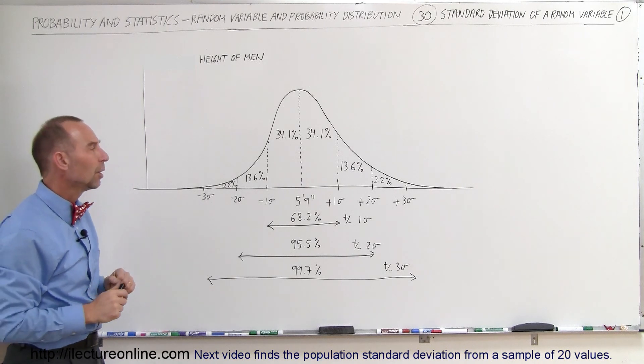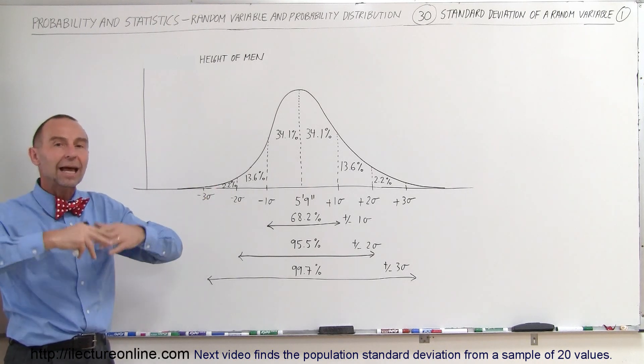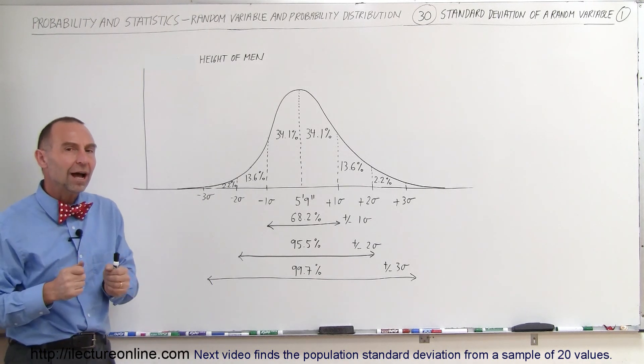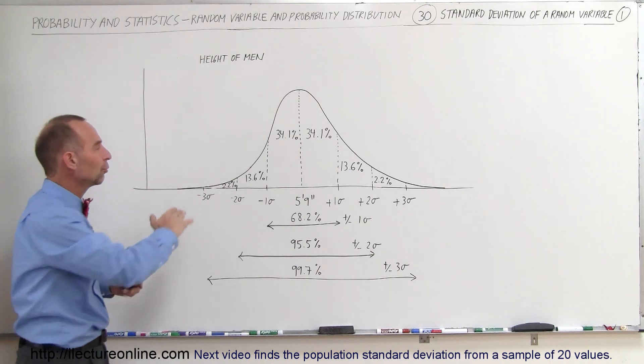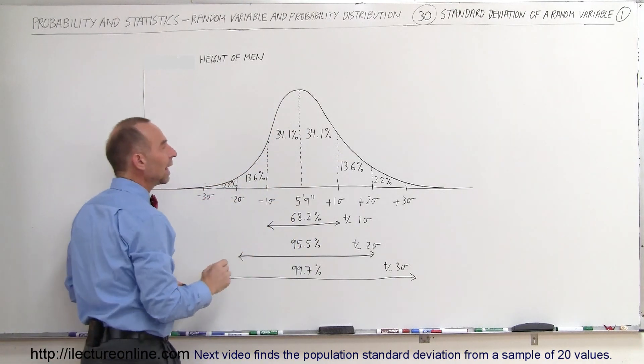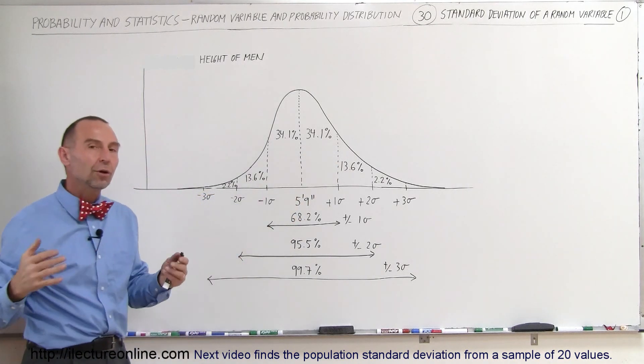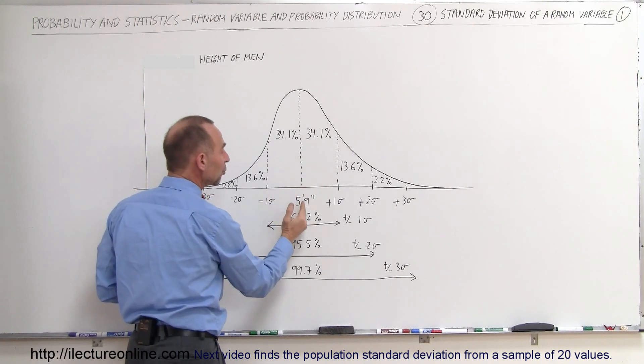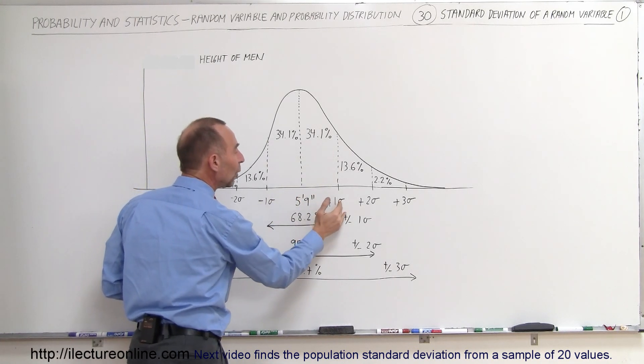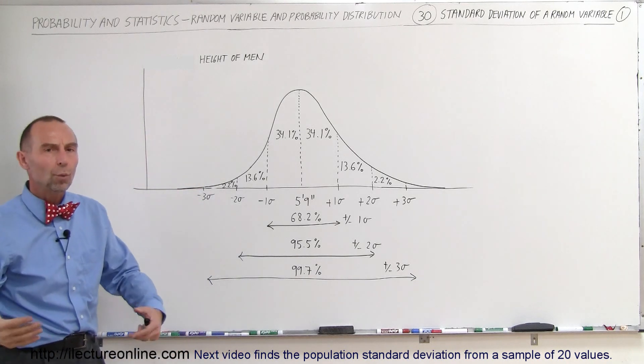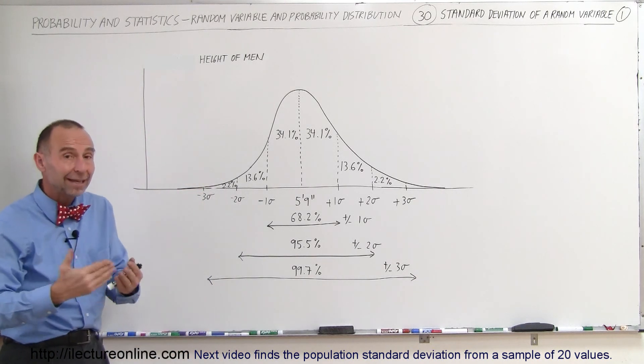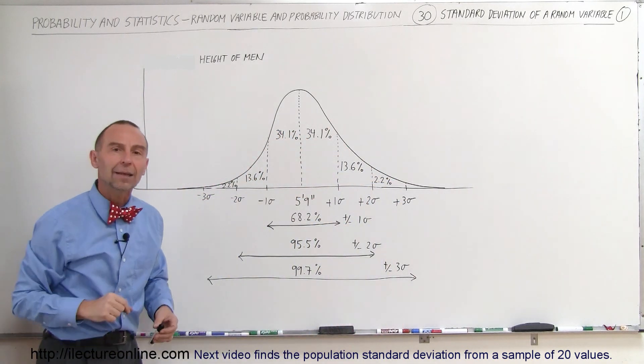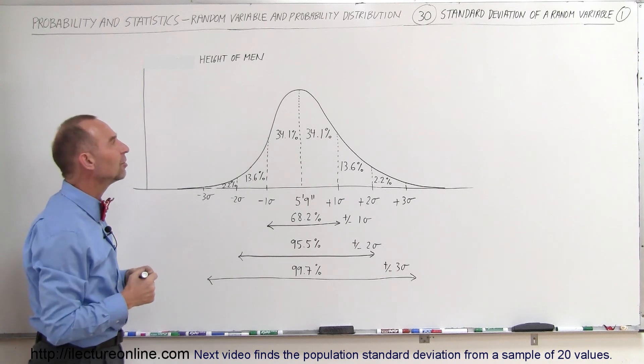Okay, what does that mean? Well, let's say we grab a million men randomly and we measure all their heights and we start distributing that on a curve. We'll get something like this. That means that 34.1% of all those men, of those million men, that of course would be 341,000, would have a height between 5'9'' and 1 sigma away from that height. Now the question is, what is 1 sigma? Well, 1 sigma is what we call the standard deviation. And there's a way to calculate that.